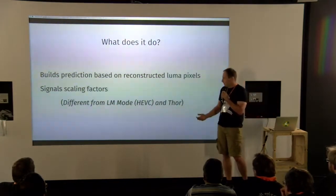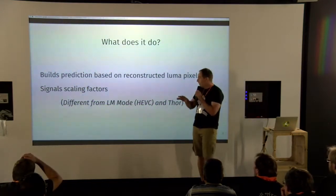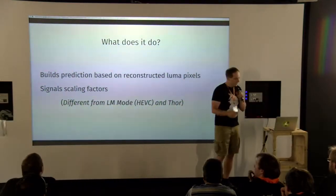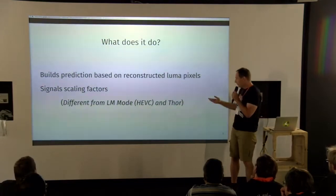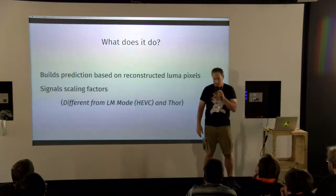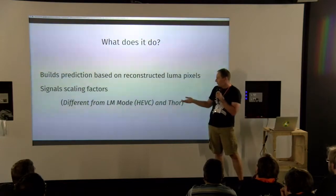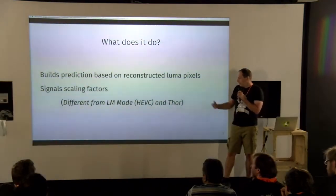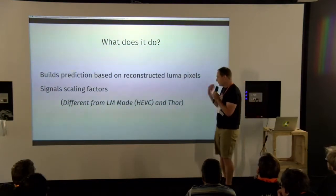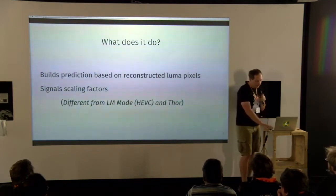So what does CFL do? It takes reconstructed luma pixels and uses them as input to create a prediction. Contrary to other CFL implementations — like the Thor codec from Cisco which also has a CFL, or LM mode which mysteriously disappeared from HEVC before release — those would imply the parameters, whereas we signal them, because experiments in DAALA showed that would work really well.